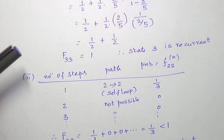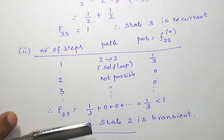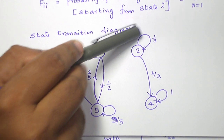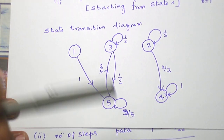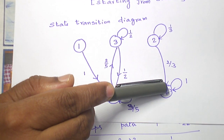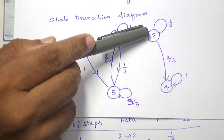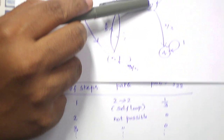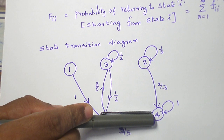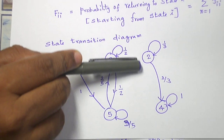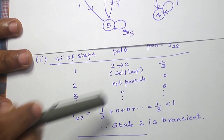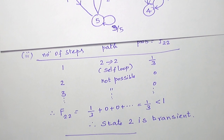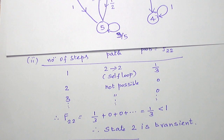Now let us repeat the same for state two. State two to two in one step is through the self loop with probability one by three. In two steps, state two goes to four and cannot return back to two, so the probability is zero. In three steps, state two goes to four, remains in four, and four to two is not possible — probability zero. Adding all these probabilities gives one by three, which is less than one. So the first time return probability from state two to two is less than one, meaning it is uncertain — state two is transient.